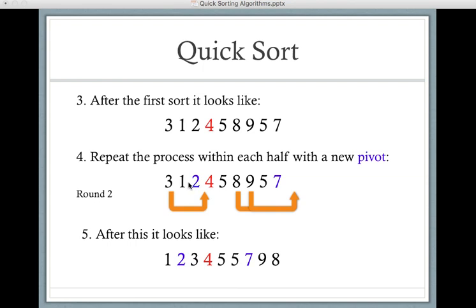So for 2, 3 needs to go on the right side because it's greater. 1 stays there. And for 7, 8 and 9 will both be moved to the right side, but 5 is less than, so it stays on the left side.